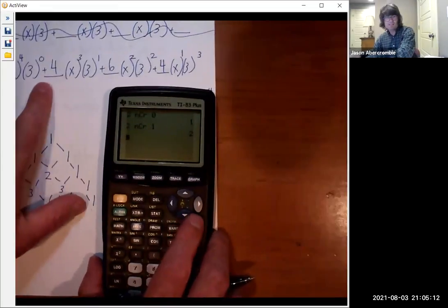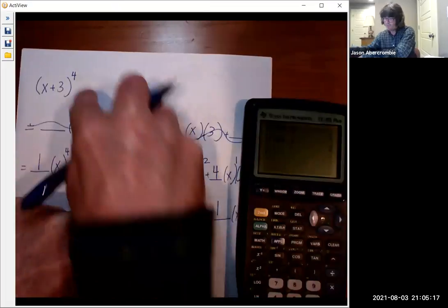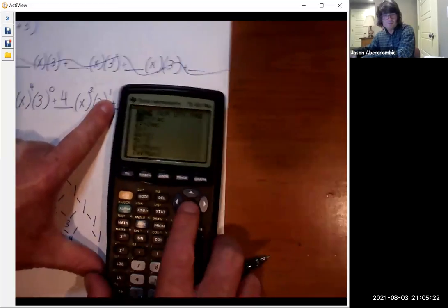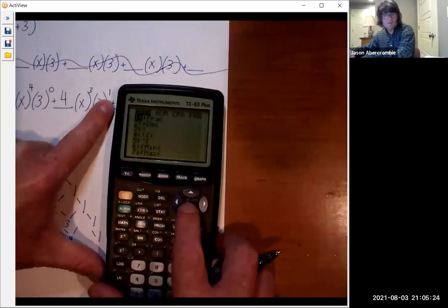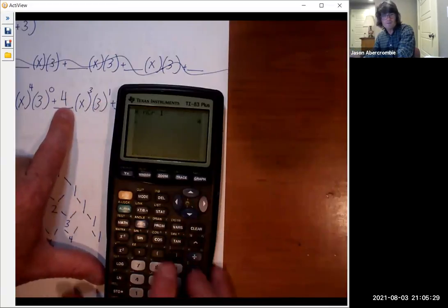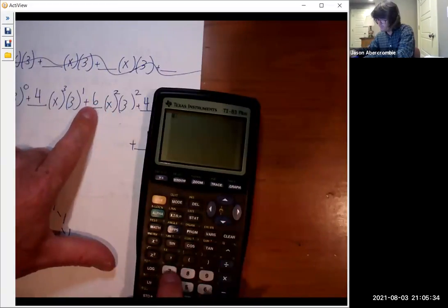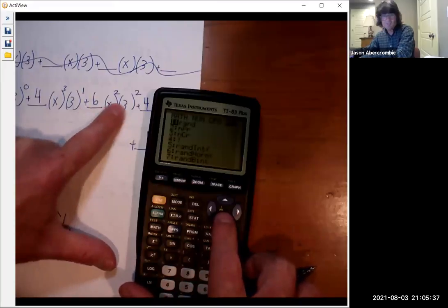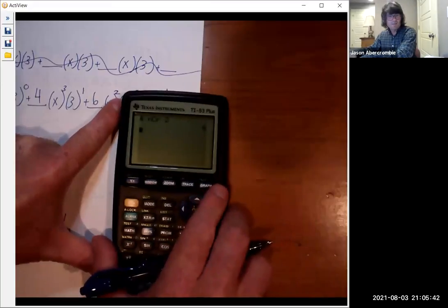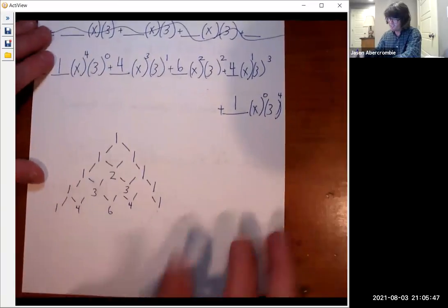Like for example, this one right here, my second coefficient, the second exponent was one. My original exponent was four. So you can do 4 NCR 1. And that should be a four. Then this one, we got a six. Let's try that one. 4 NCR 2. So sure enough, that's a six. So you can do all your coefficients that way if you want to, or with the Pascal's triangle. So let's finish this up now.